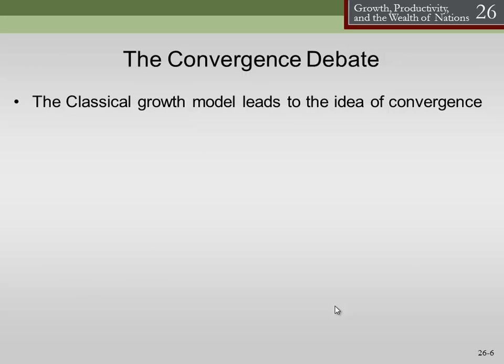Eventually we should come up to some steady state level of output per worker or output per person. Then shouldn't other countries grow up to that point? Shouldn't we all converge to the same output per worker? The idea behind this is simple: if the law of diminishing marginal product of capital kicks in, shouldn't some country with a very small amount of capital have a much higher return for investing in capital there than in the United States? A great example would be a highway system.